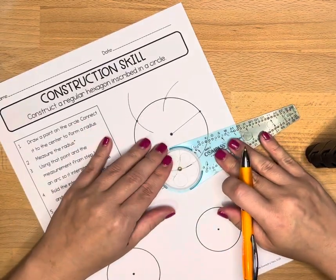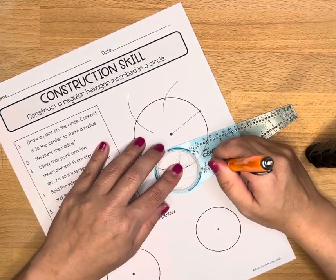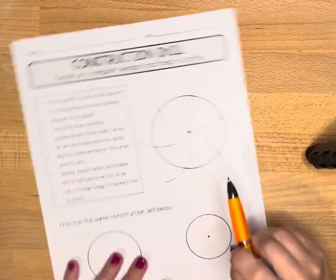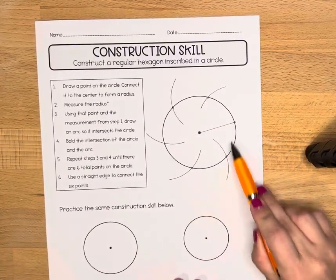And I'm going to do this one last time. And now I have six points on the circle.